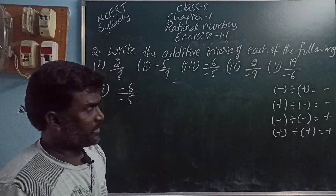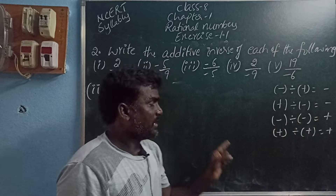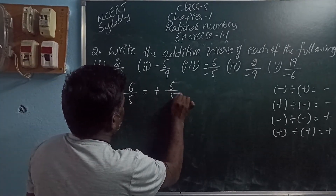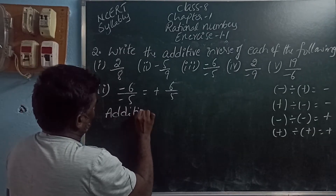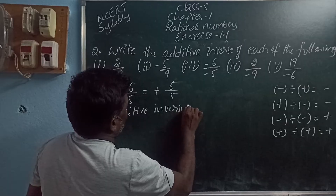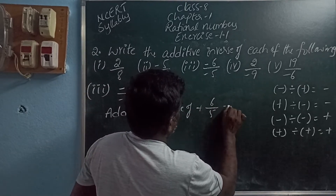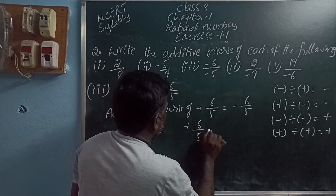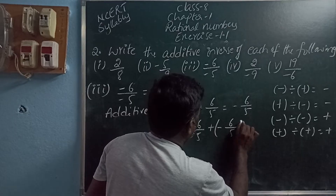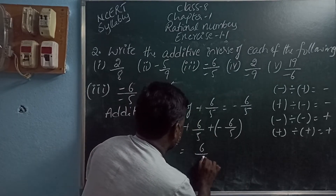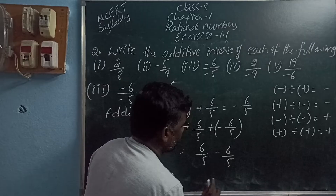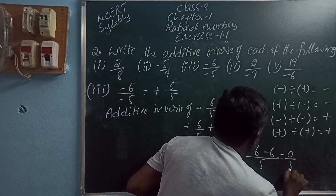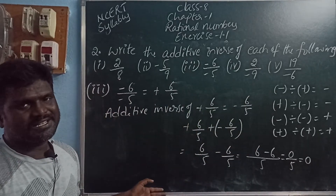Minus 6 by minus 5. Minus by minus gives plus. So minus 6 by minus 5 equals plus 6 by 5. The additive inverse of plus 6 by 5 is minus 6 by 5. Adding these two: plus 6 by 5 plus minus 6 by 5. Plus into minus is minus 6 by 5 minus 6 by 5. Write the common denominator, subtract the numerators: 6 minus 6 is 0. 0 by 5 is 0. Zero is the identity element.